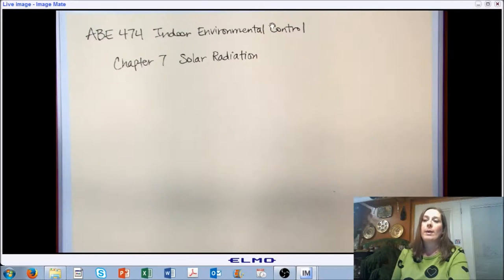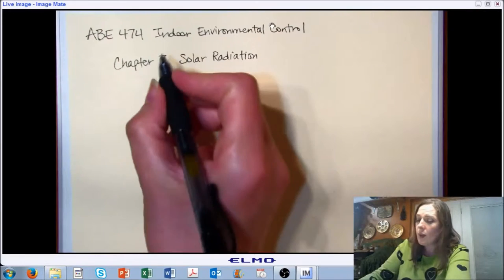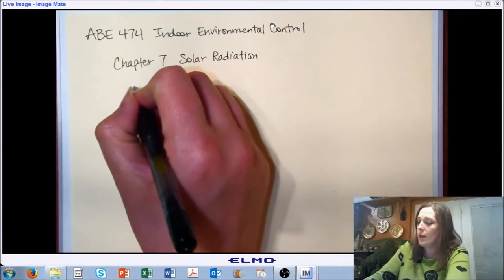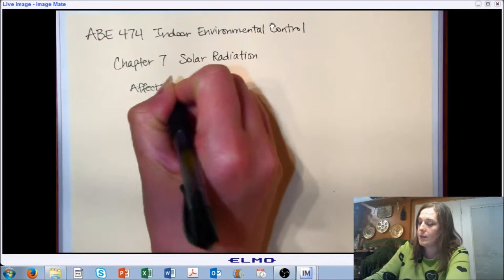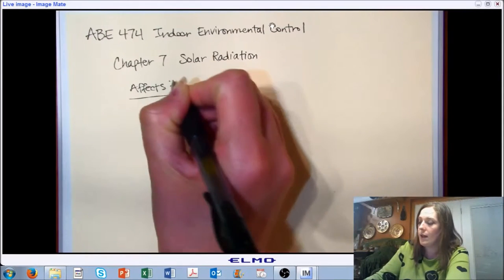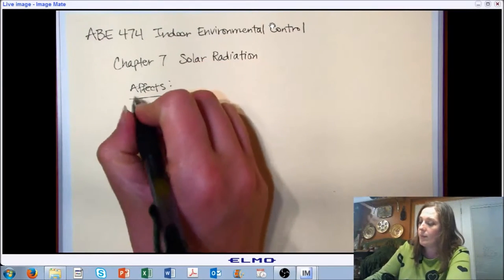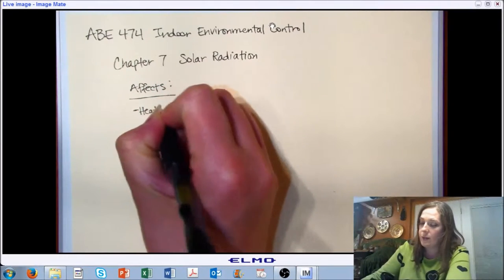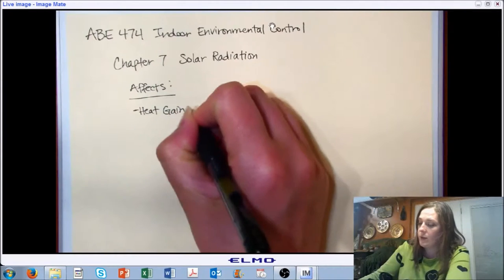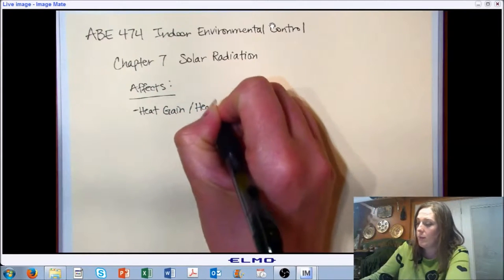We'll wrap up by talking about heat gain based upon the solar irradiation that's coming onto a surface. Let's go ahead and get started with our introduction. We're interested in solar irradiation because it can have a number of effects related to our design for environmental control. We've already seen the importance of understanding heat gain and heat losses from a building.